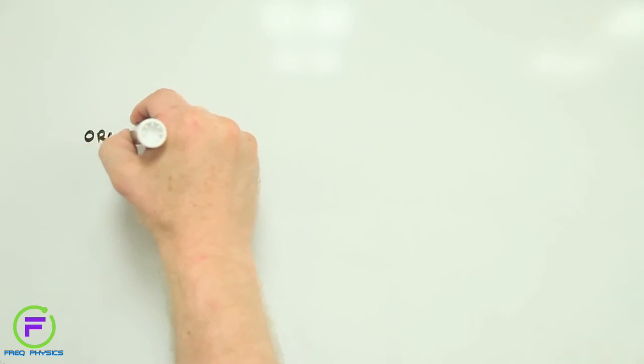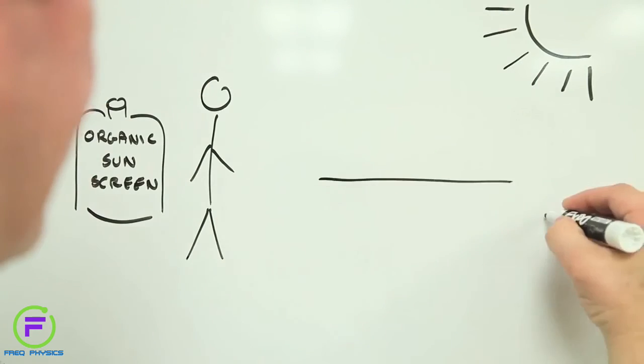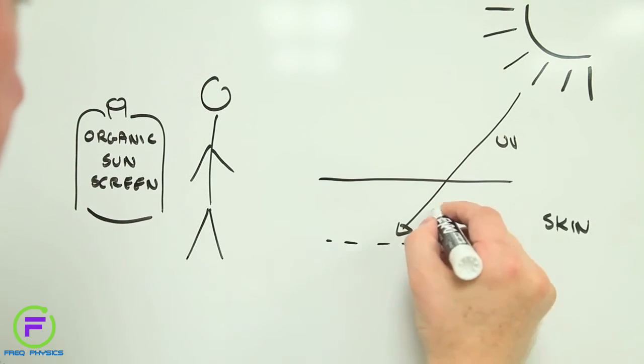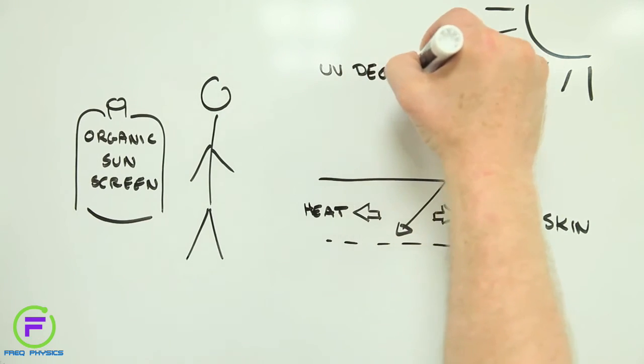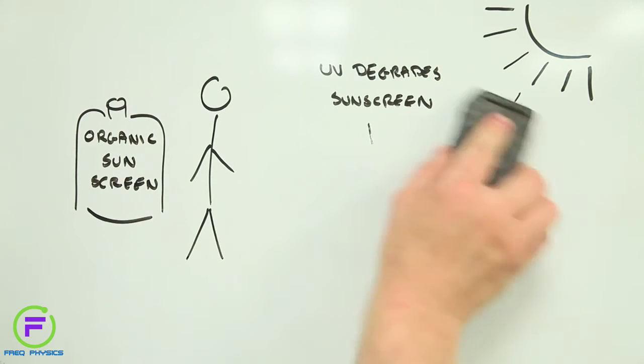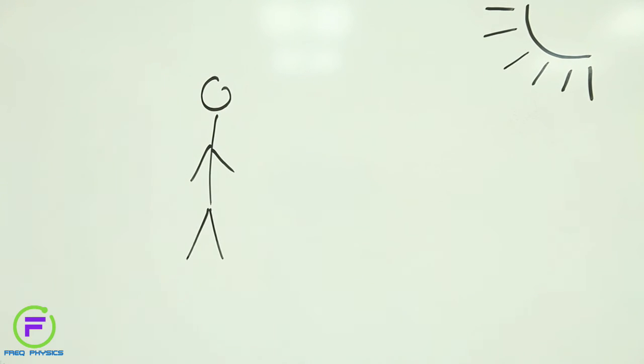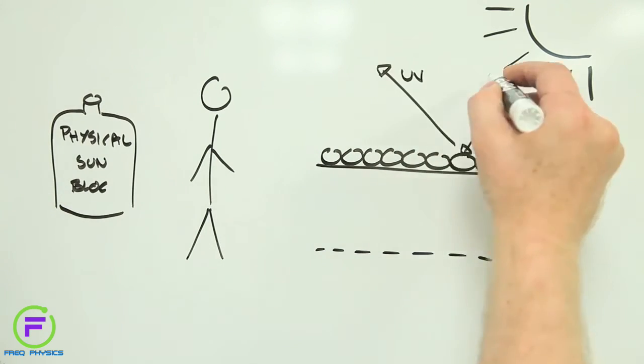Many sunscreens use organic chemicals to protect the skin against the sun's ultraviolet rays. But to work, these chemicals have to be absorbed into the skin. And over time, the UV radiation breaks them down and makes them ineffective. This is why sunscreens need to be reapplied every few hours. Inorganic sunscreens, on the other hand, work differently.